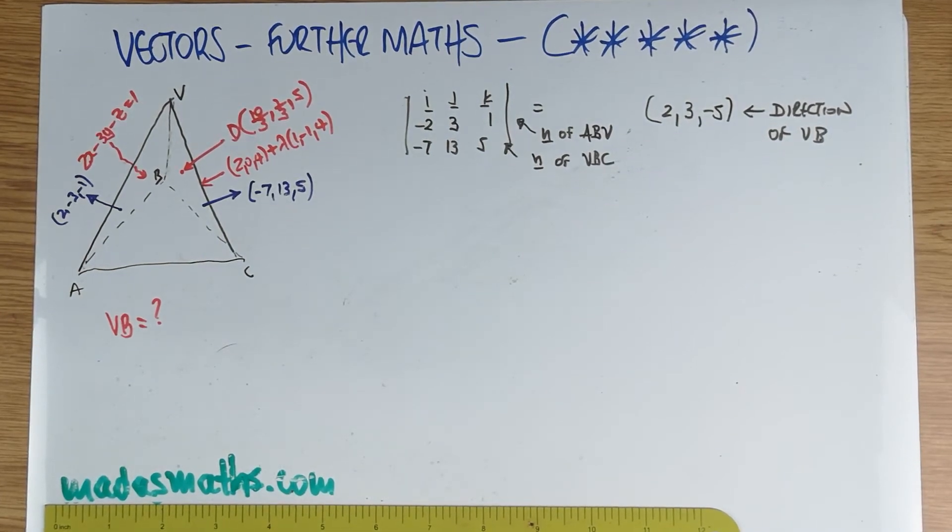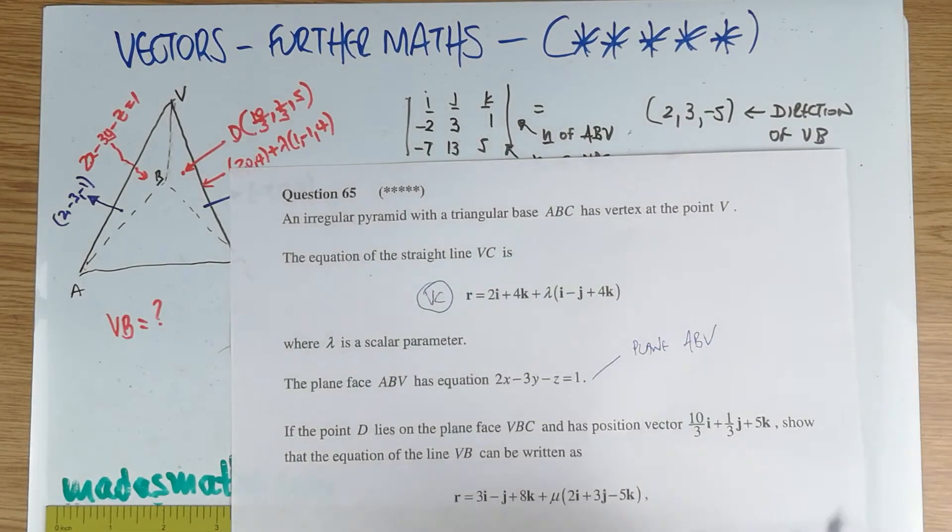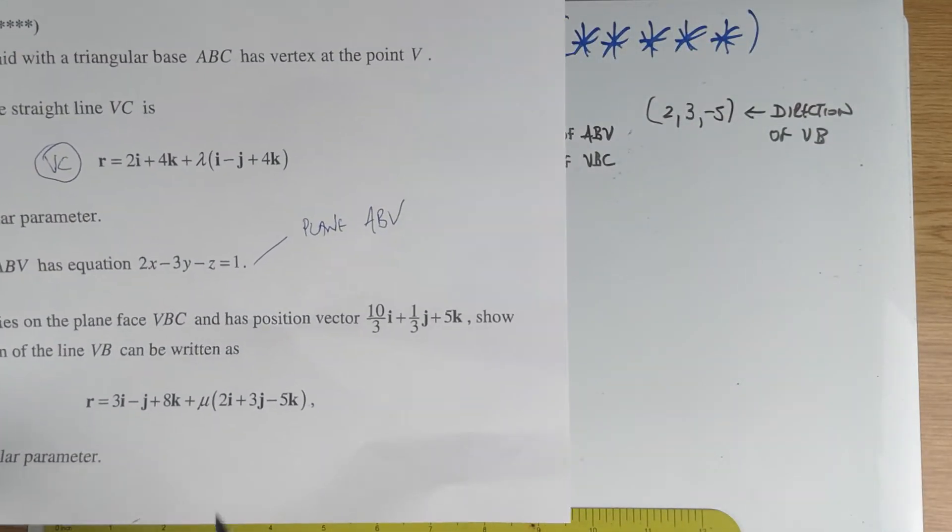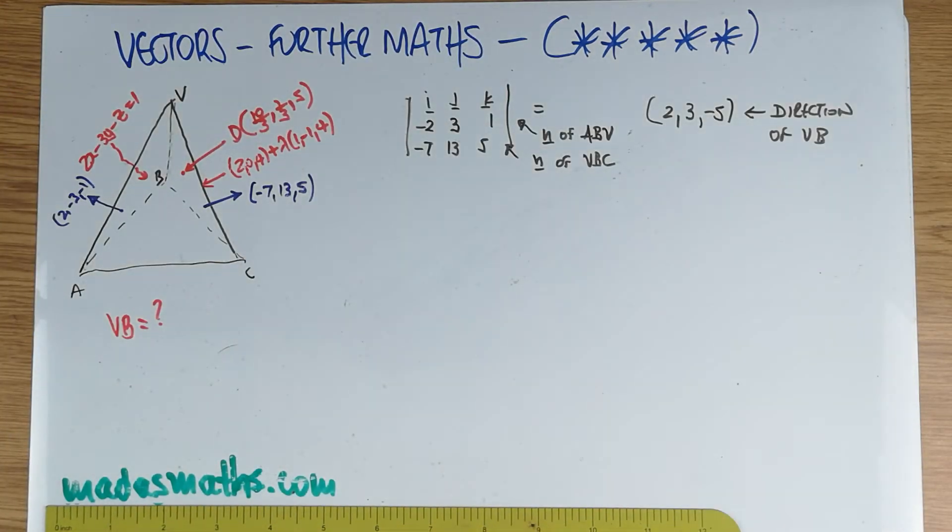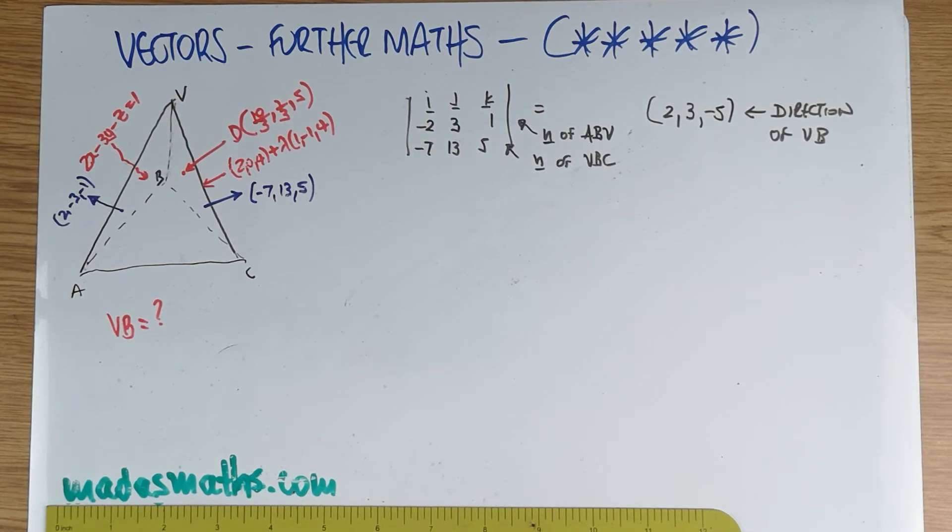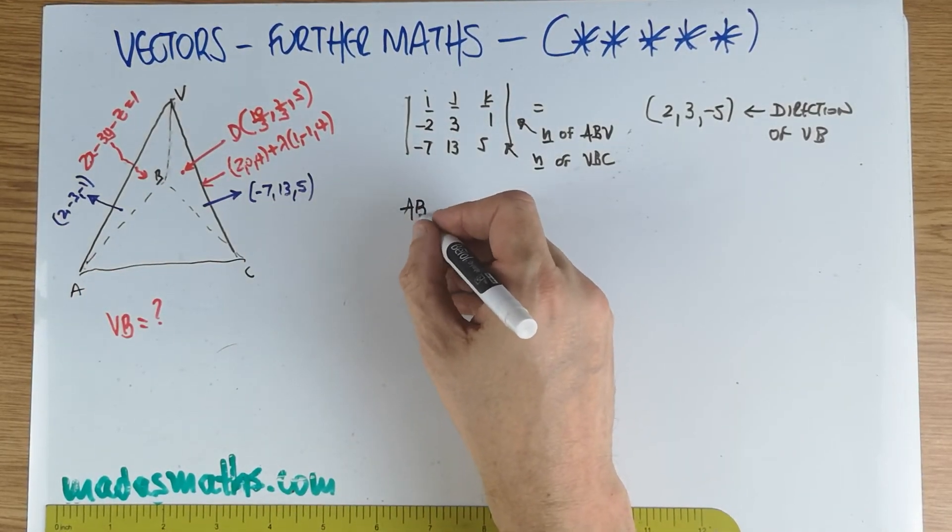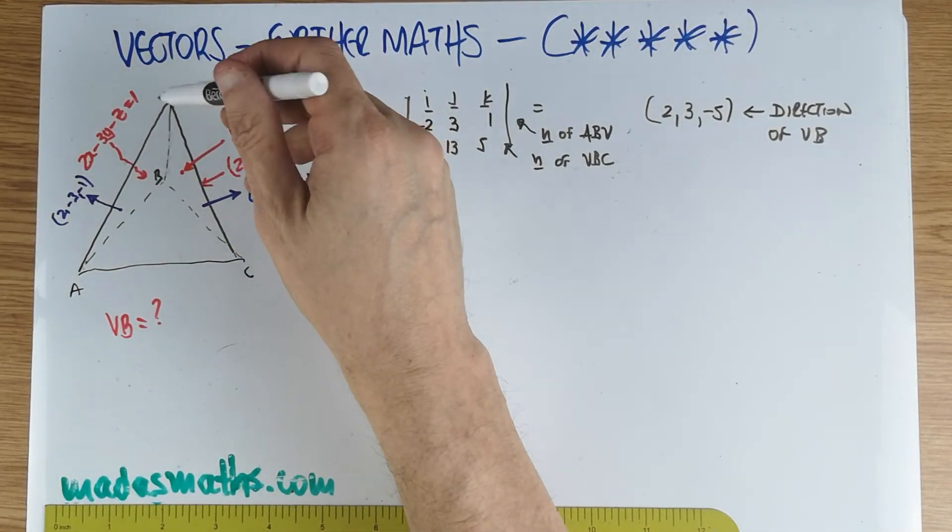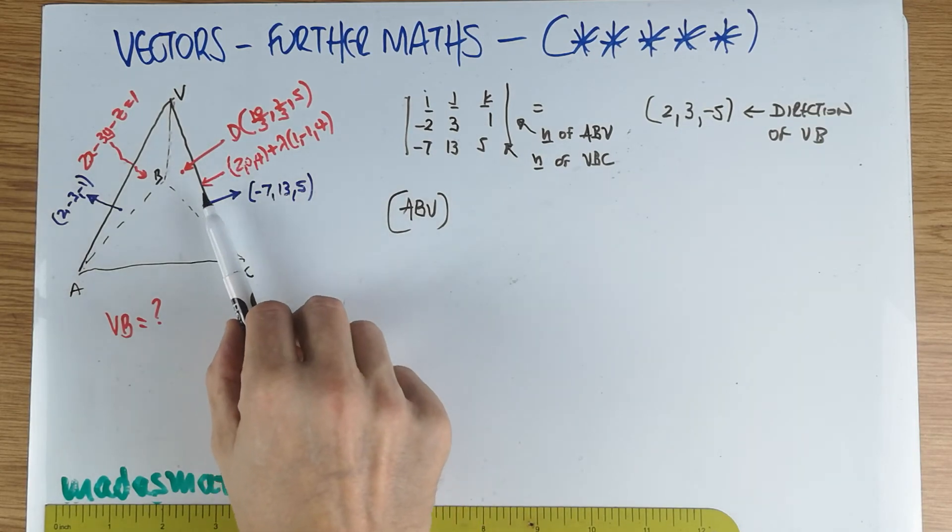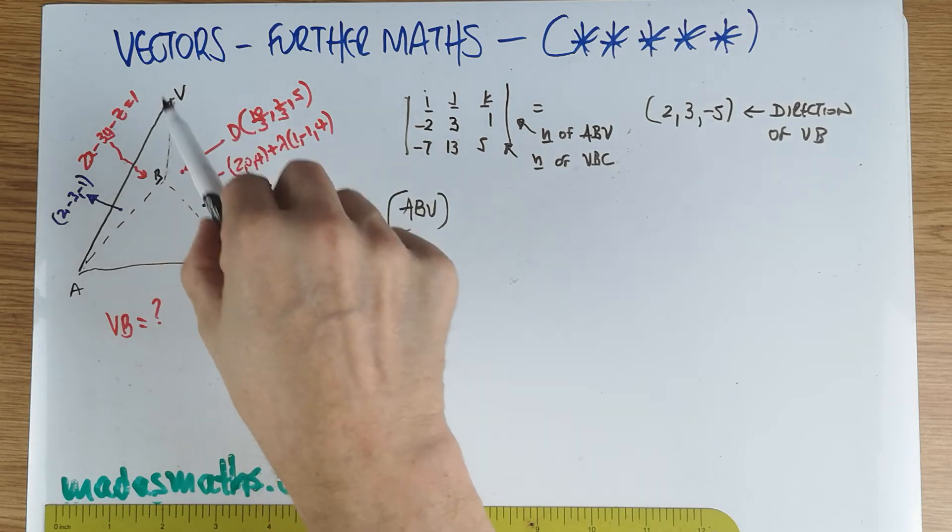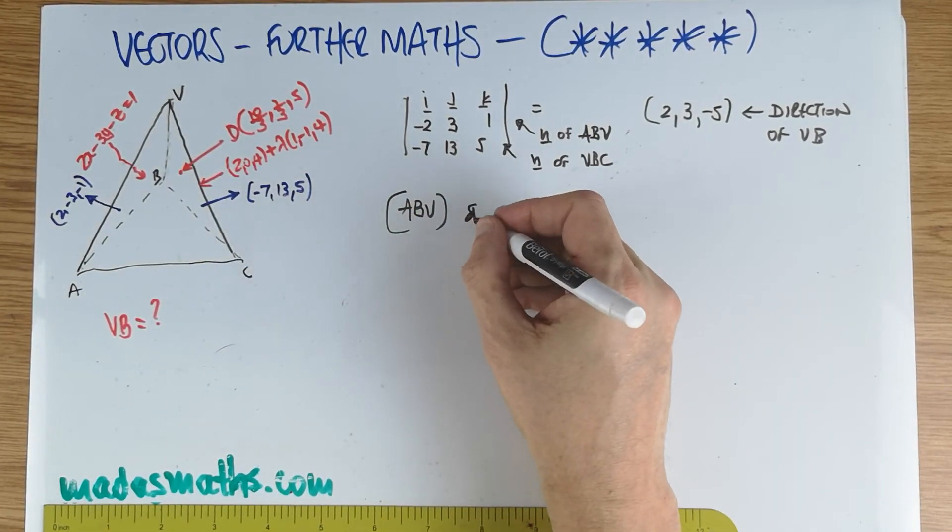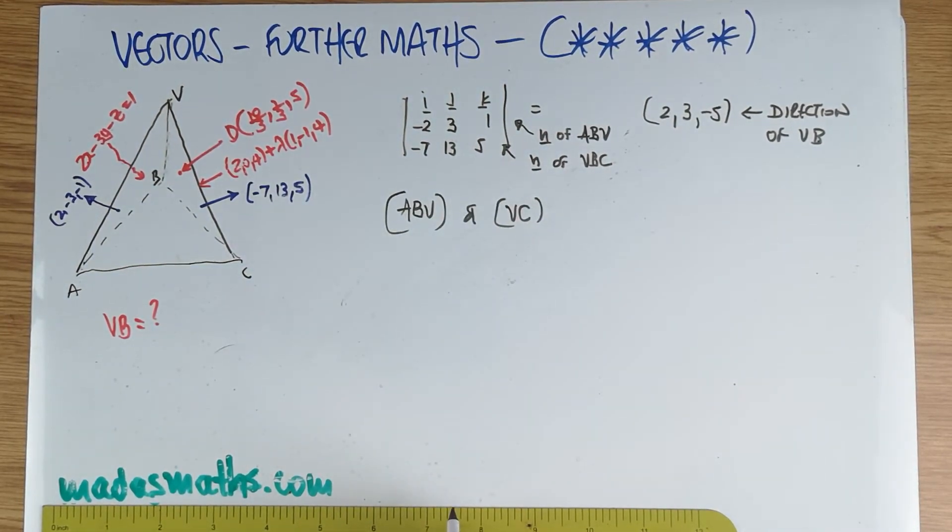We still have, in order to, because the question says, show the equation of this line is that. And you can actually see, I don't know if it's visible on the video, that we got the right direction, 2, 3, minus 5. We just need a point on this particular line. How are we going to get a point? Well, if we solve simultaneously, the equation of the plane, ABV, if we solve simultaneously, the equation of the plane, ABV, and the line VC, because of course, you can think of the line VC, which we have this equation is going something like that. And you will cross, you know, not in the cross product kind of sense, but crossing as going through the plane ABV. So if we do ABV and VC, we'll get, of course, the coordinates of V, which are common to both.